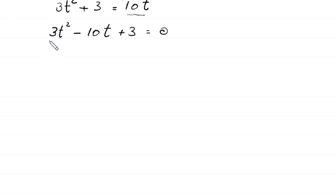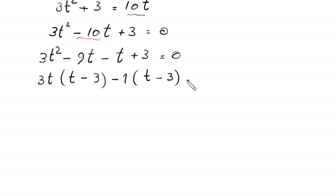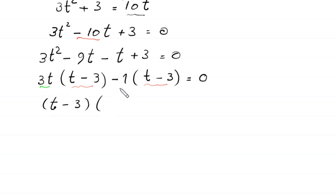This quadratic is factorable. We split negative 10t as negative 9t minus t: 3t² minus 9t minus t plus 3 equals 0. Factoring: 3t(t minus 3) minus 1(t minus 3) equals 0. The common factor (t minus 3) gives us (t minus 3)(3t minus 1) equals 0.